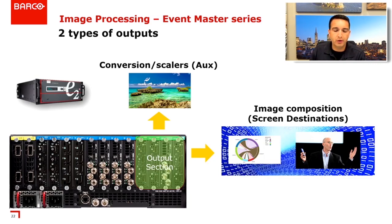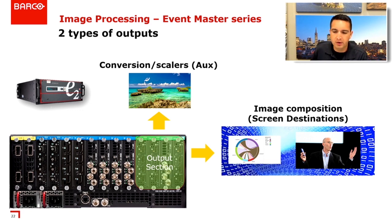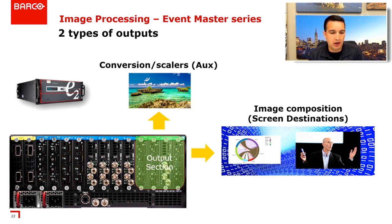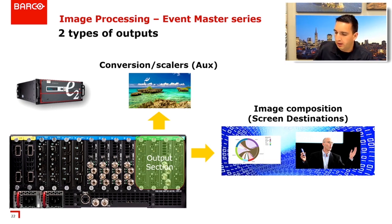We have two types of outputs: image compositions, also known as screen destinations, and conversions/scalers, also known as auxes. Those are two very different types of outputs. We'll call them screen destinations or auxes as we progress through the setup today.